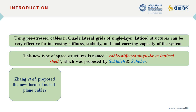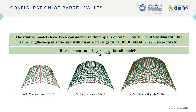Zhang proposed a new form of out-of-plane cables. The study models have been considered in three spans of 25 m, 50 m, and 100 m, with the same rise-to-span ratio and with quadrilateral grids of 10×10, 14×14, and 20×20, respectively. The rise-to-span ratio is 0.2 for all models.